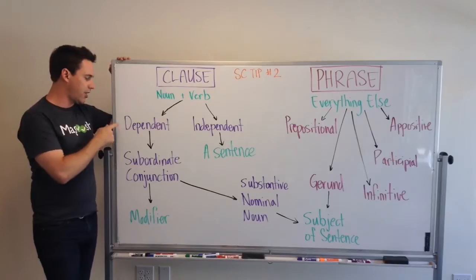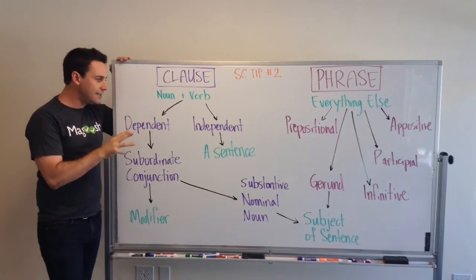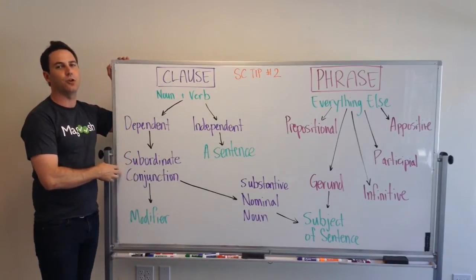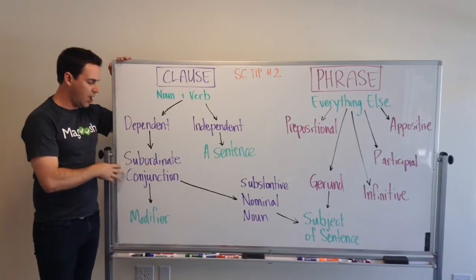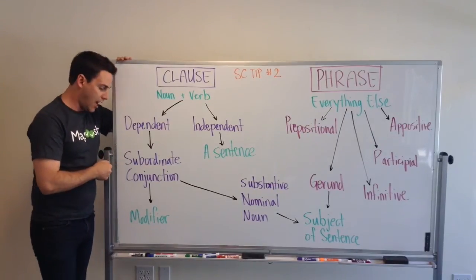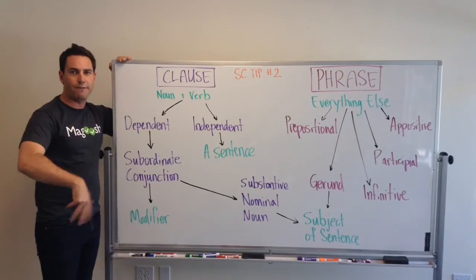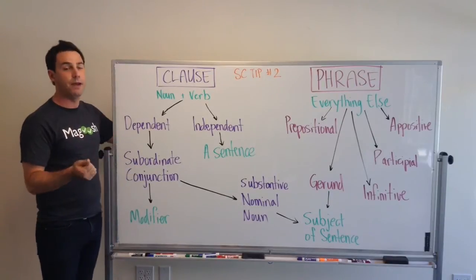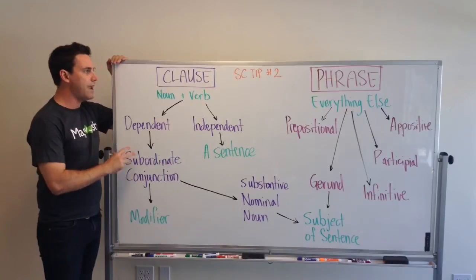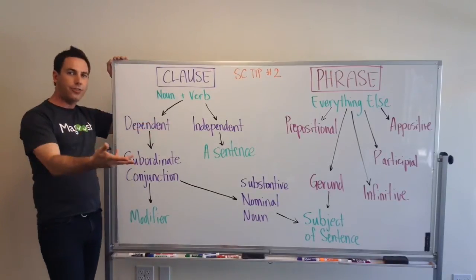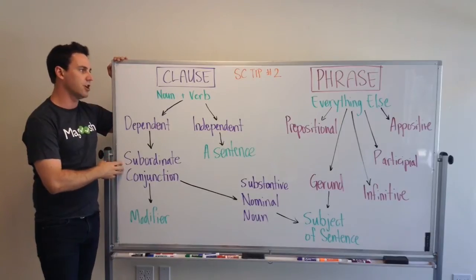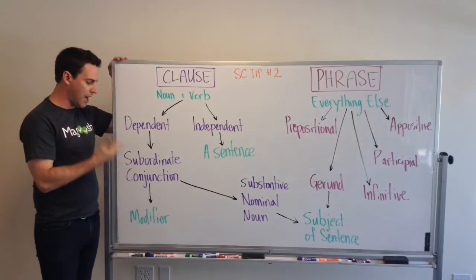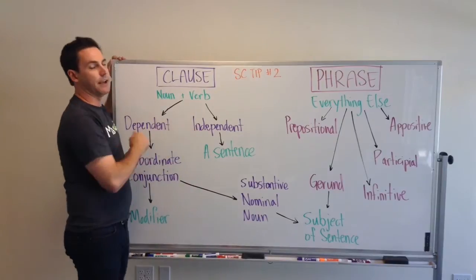We also have clauses called dependent clauses. These still contain a noun and a verb, but they have one extra word — usually at the beginning, almost always at the beginning — which is a subordinate conjunction. I'll put a list of examples of subordinate conjunctions below the video in the text. There are a ton of them, and they make the clause dependent on other information.